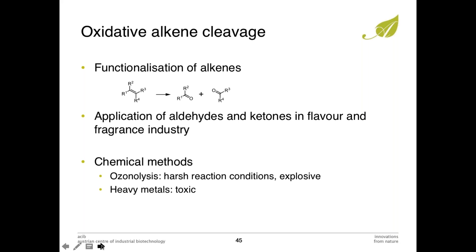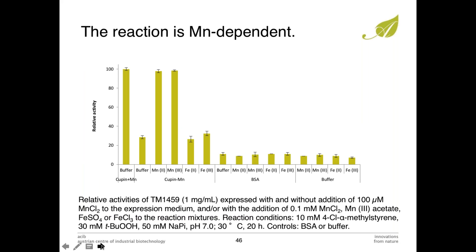For alkane cleavage, chemical methods like ozonolysis require harsh and explosive conditions, and it can also be done with heavy metals, which are toxic. So enzymes are an attractive alternative. One enzyme was known before from Wolfgang Rüthl that can do the reaction quite nicely. When we started out, we had the issue that the paper stated manganese was found in the structure, which we could not confirm when we followed their exact procedure. We eventually figured out by adding different metals that it is indeed manganese-dependent, and it seems to be Mn(III) that is responsible for the reaction, cycling back to Mn(II), though we don't have definitive proof as we ran out of labeled oxygen.